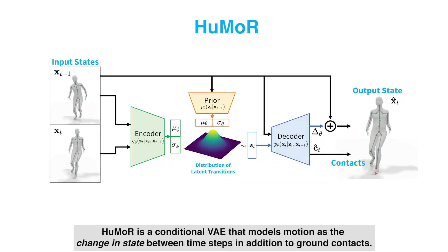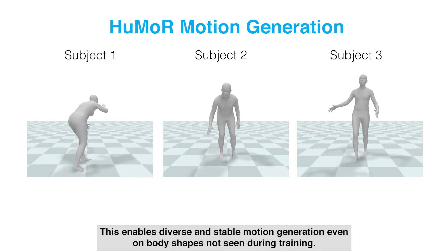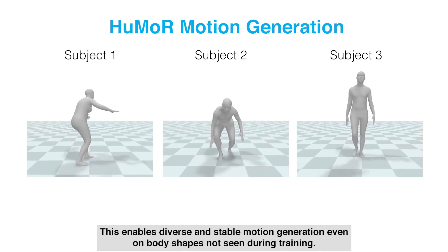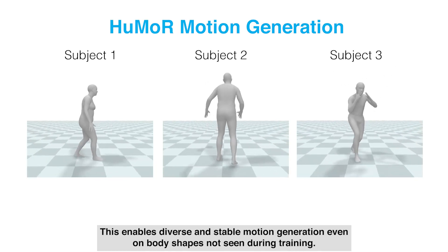HUMOR is a conditional VAE that models motion as the change in state between time steps, in addition to ground contacts. This enables diverse and stable motion generation even on body shapes not seen during training.